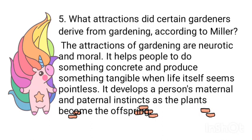What attraction did certain gardeners derive from gardening, according to Miller? The attractions of gardening are neurotic and moral. It helps people to do something, concentrate, and produce something tangible when life itself seems pointless. It also develops a person's maternal and parental instincts, as a plant becomes like an offspring.